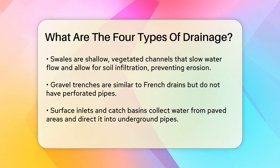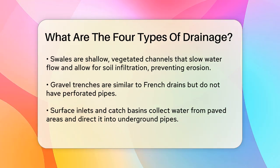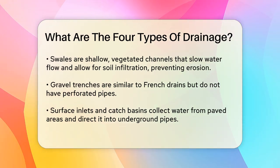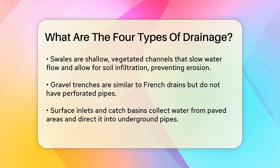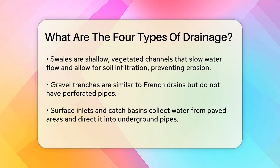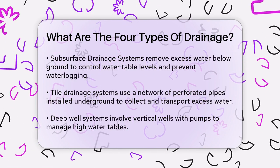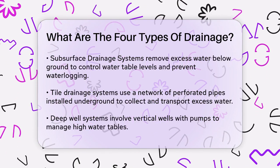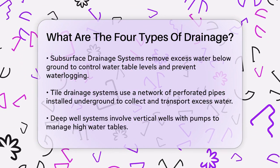Next up is the subsurface drainage system. This system focuses on removing excess water below the ground surface, helping to control water table levels and prevent waterlogging. Tile drainage systems are a common type here, involving a network of perforated pipes installed below the ground to collect excess water and transport it to an outlet or drainage ditch. Deep well systems are used in areas with very high water tables and involve vertical wells with pumps to lower the water level deep underground.